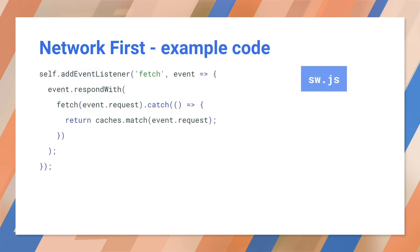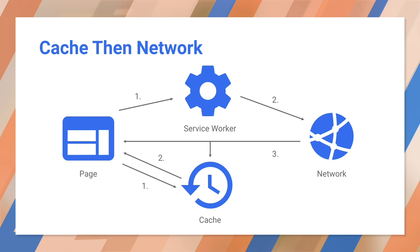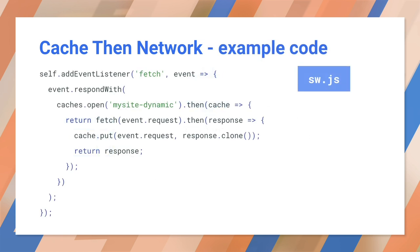Take a look at the next pattern — cache then network — for a better solution. This approach goes to the cache and to the network, uses the cache response first, and then updates the page and cache once the network responds. This works well for content that updates frequently. The service worker makes two requests — one to the cache, one to the network — and the idea is to show the cached data first and then update the page when or if the network data arrives. Sometimes you can just replace the current data when new data arrives, for example a game leaderboard, but that can be disruptive with larger pieces of content. Don't disappear something if the user may be reading it or interacting with it. The code fetches the resource, then updates the resource in the cache and returns it to the page.